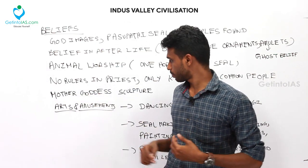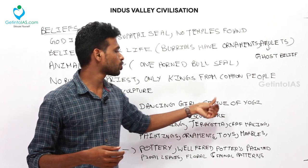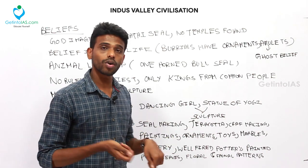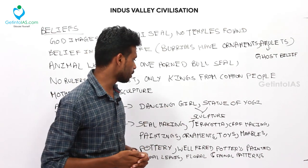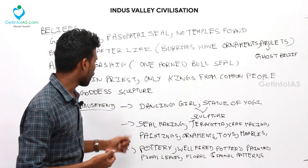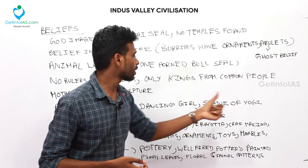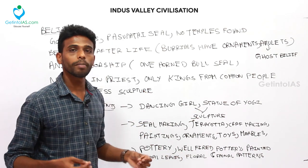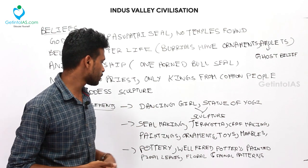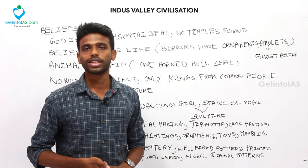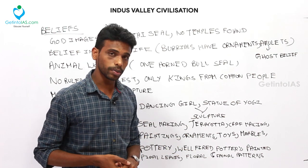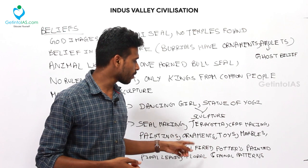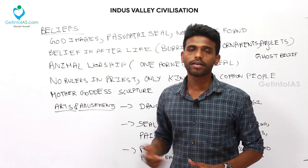Regarding arts and amusement: a famous bronze statue of a Dancing Girl was found at Mohenjo-daro, and a sculpture of a yogi — a bearded man with a shawl around his shoulders and half-closed eyes — was also found. Other art activities included seal making, terracotta craft, paintings, ornaments, toys, and marbles. Pottery was a well-established industry — well-fired pottery was manufactured, painted with leaves, and floral and faunal patterns.